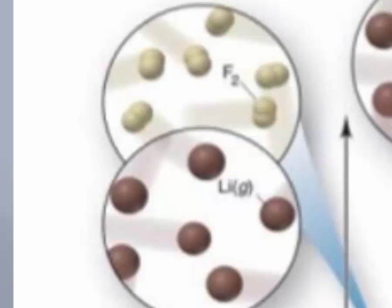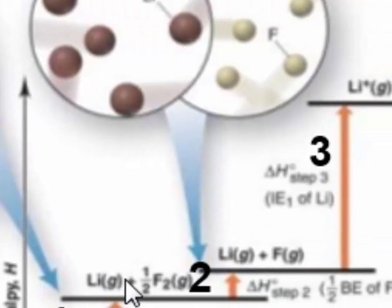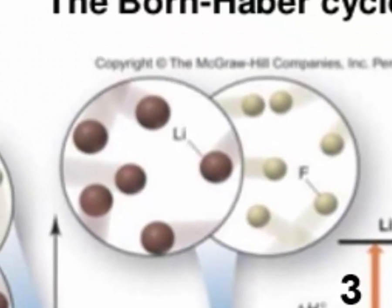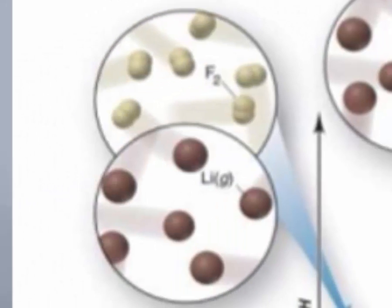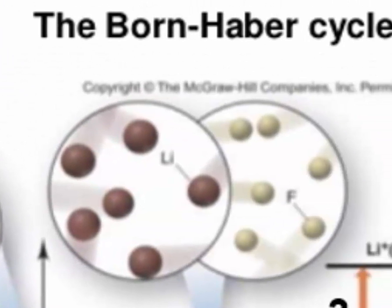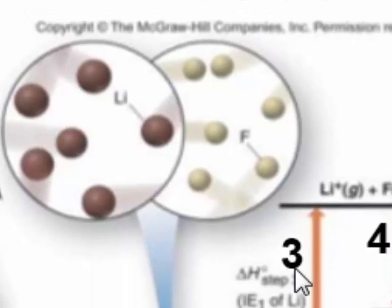In the second step, we're going from this chemical system to the next state, in which you've got lithium atoms in the gas phase plus individual fluorine atoms in the gas phase. To get from here to here, you had to break the bonds in this one half mole of fluorine, and end up with a full mole of fluorine atoms.